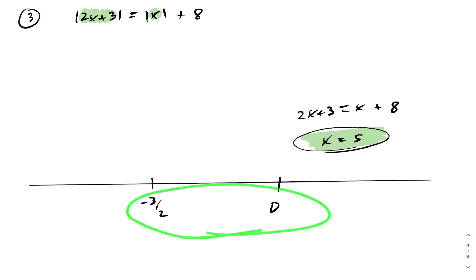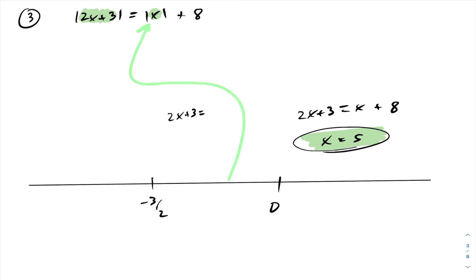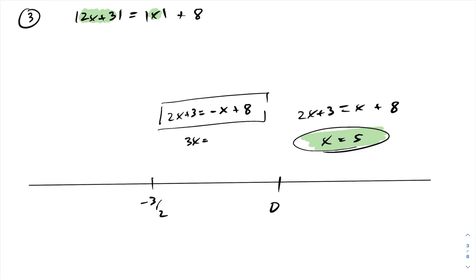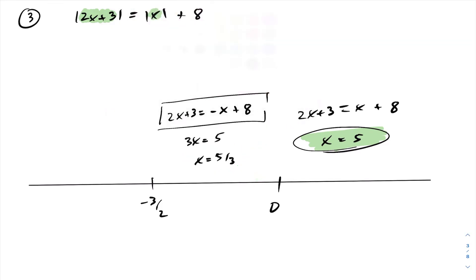Now let's look at the interval between negative 3 halves and 0. If we substitute in, say negative 1, the result for the first absolute value is positive so we can drop that sign. However, substituting negative 1 into the second gives a negative result, so dropping that absolute value sign will cost us a minus sign in front. Solving this equation gives us 3x equals 5, and x equals 5 thirds. However, 5 thirds is not inside this interval, so this solution is inadmissible and we exclude it from our answer.